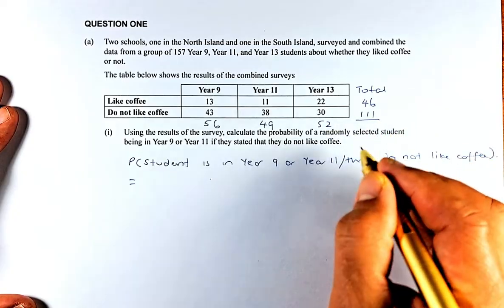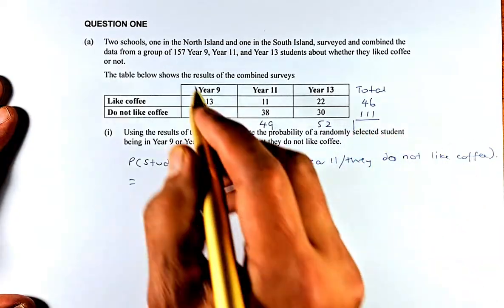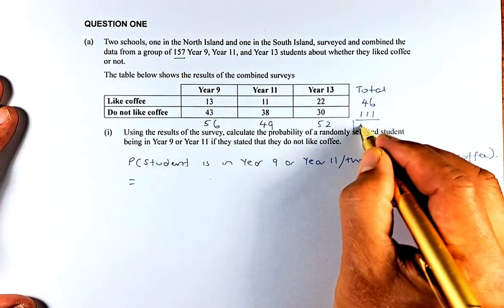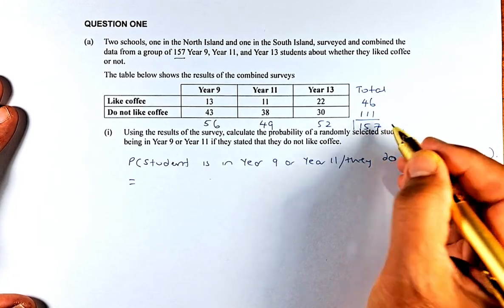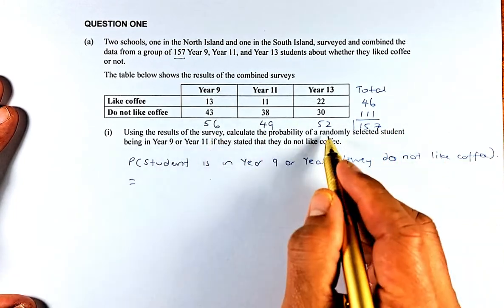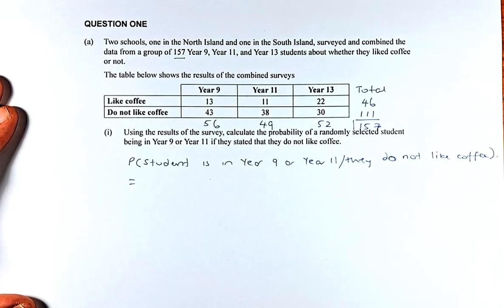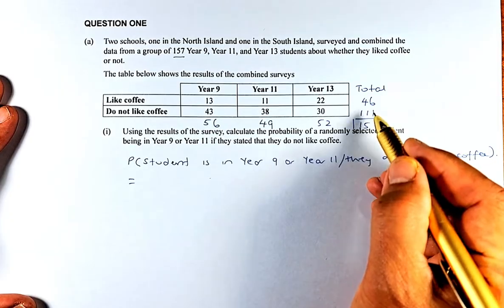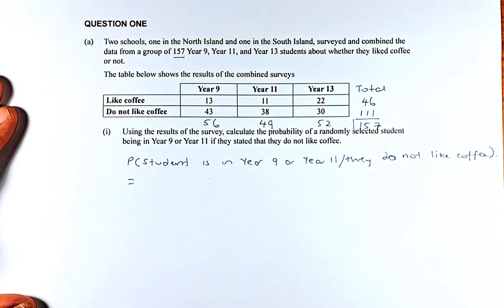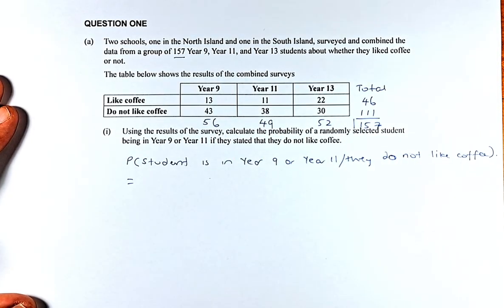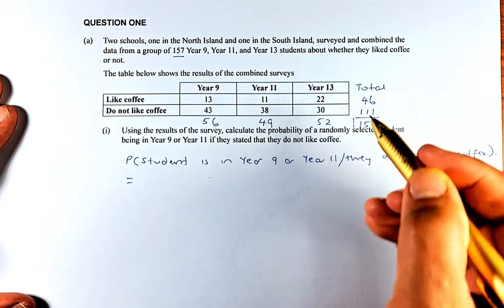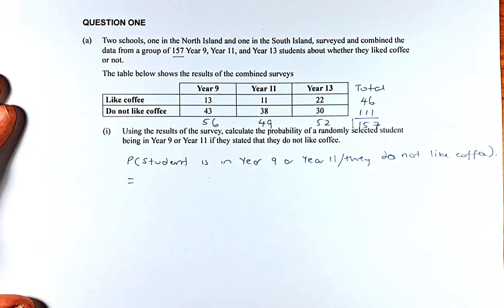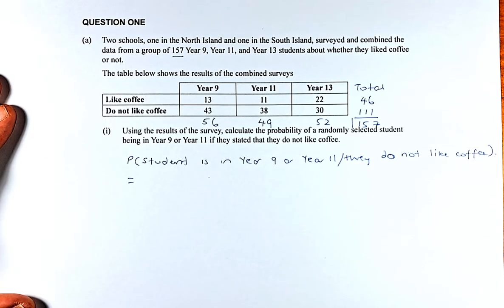The total number of students is 157. Adding 46 plus 111 equals 157. At the same time, 56 plus 49 plus 52 also equals 157. Most people will get it wrong because they're going to add this total plus that total and get 314. So remember, you either add the column total or the row total.